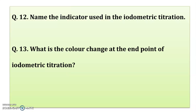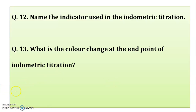Name the indicator used in iodometric titration. In experiment number 1, potassium permanganate itself acts as an indicator — no external indicator is added. But in experiment number 2, starch is used as an indicator. Remember, in this experiment starch is used as an indicator, and mostly in all iodometric titrations starch is used as an indicator.